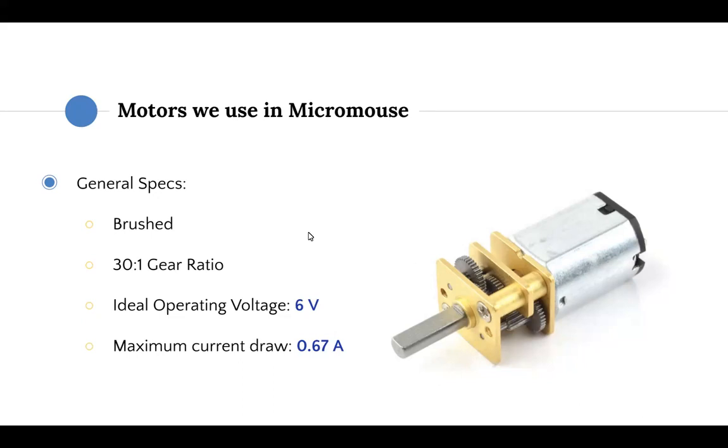It is a brushed motor with a 30 to 1 gear ratio. Please watch the lecture recording to understand why it's significant that we have a 30 to 1 gear ratio. The motor also has an ideal operating voltage of 6 volts and a maximum current of 0.67 amps. Knowing these figures is important to understanding and knowing how to power the motor, as I'll cover in a few slides.